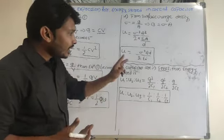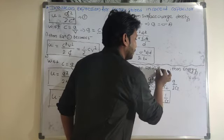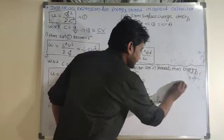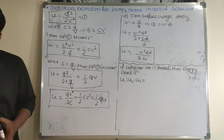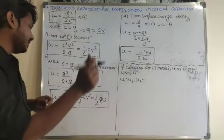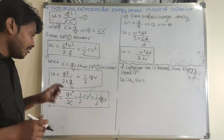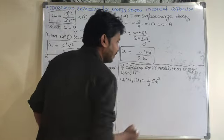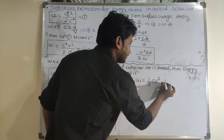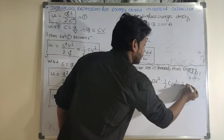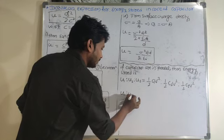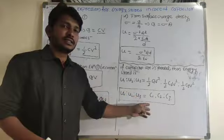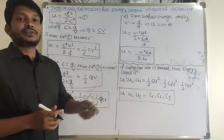If capacitors are connected in parallel, potential difference remains the same. Using U = ½CV²: U1 : U2 : U3 = ½C1V² : ½C2V² : ½C3V². The ½ and V² terms cancel, giving U1 : U2 : U3 = C1 : C2 : C3. This is the required equation for energy stored in parallel combination.